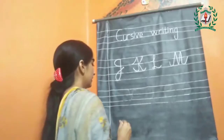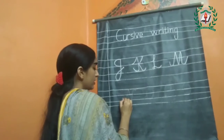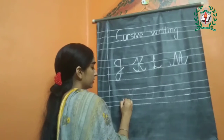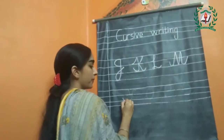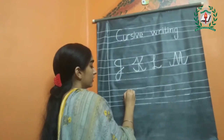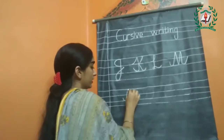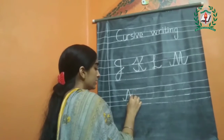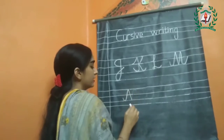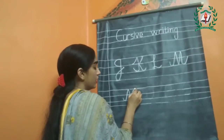Next letter is N. Start by making a curve touching to the baseline. Then followed by a slanting line touching to the upper line. And one more slanting line touching to the baseline. One more slanting line touching to the upper line with a curve.